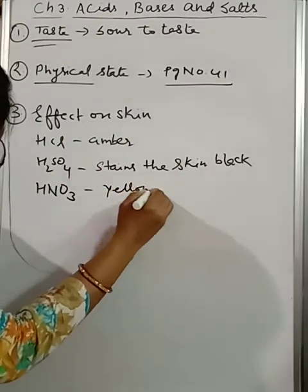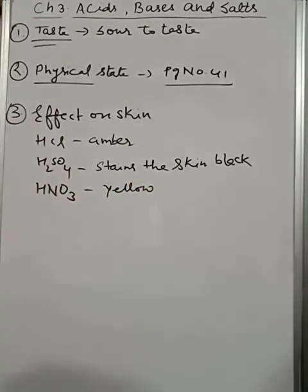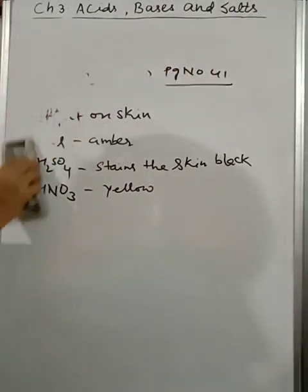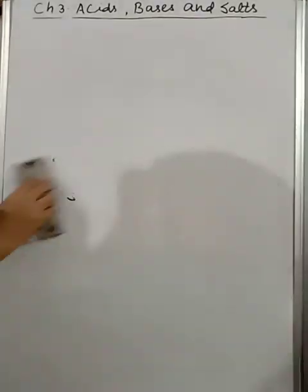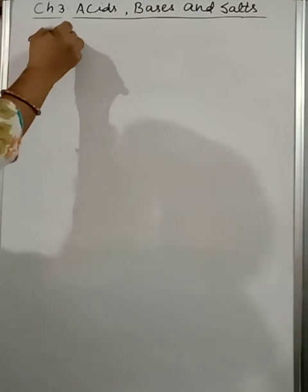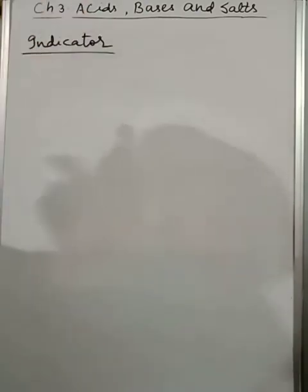Now we are going to discuss the most important point, and that is mainly coming in exams: effect of indicators. When we combine an acid with an indicator. But before thinking about the effect, first we must know what is the meaning of indicators. Indicator is a substance, a complex substance, which is used to identify whether the given substance is acidic, basic, or neutral in nature. So here we are going to discuss regarding acidic effect.